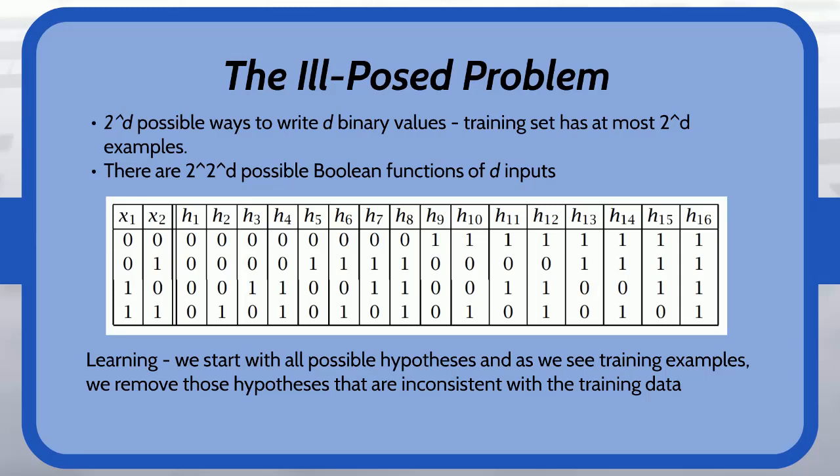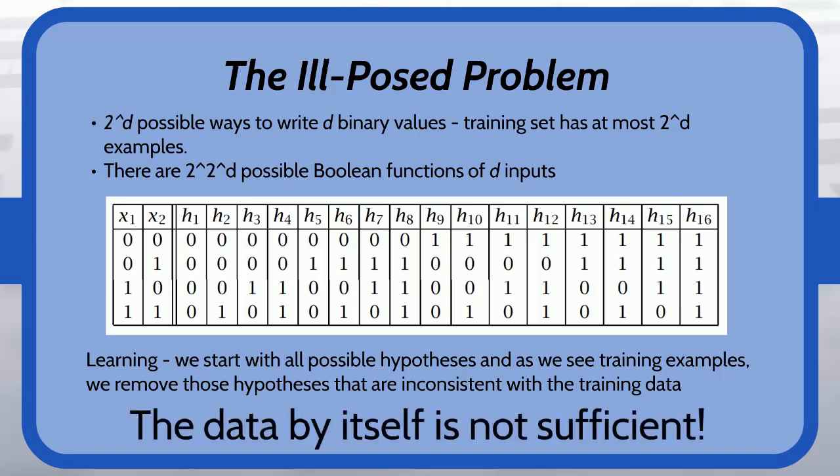If the training set we are given contains only a small subset of all possible instances as it generally does, then the solution is not going to be unique that we find. So this is actually a problem. The data by itself is not sufficient to find a hypothesis because we would have to see every individual possible point to find a unique solution. So this is the ill-posed problem and this is actually a problem with classification problems and regression problems as well. It doesn't just apply to boolean functions. In order to find a unique hypothesis we would have to know every possible value.